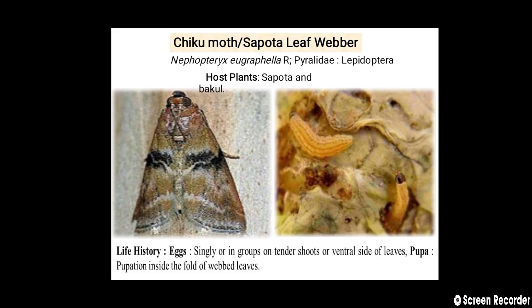Then the next point is life history. The oviposition site — meaning the site of egg laying — is singly or in groups on tender shoots or the ventral side of leaves. Pupation takes place inside the fold of webbed leaves.